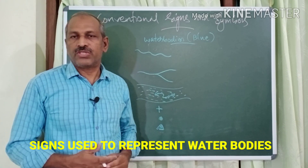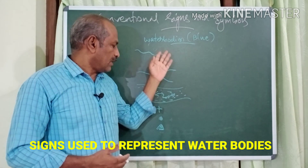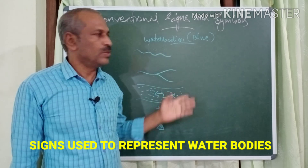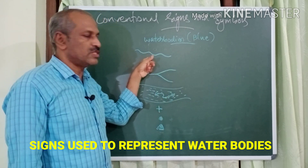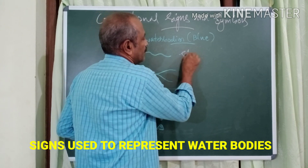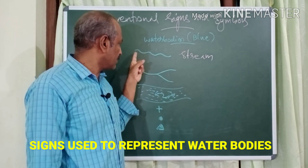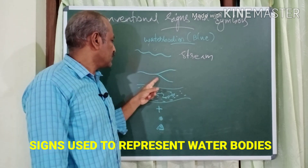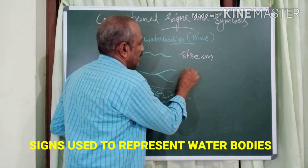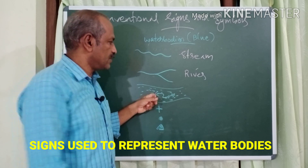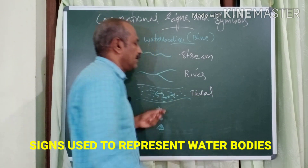Now let's see how water bodies are represented in the topographic map. Water bodies are represented using blue color. A thin single line represents a stream. A wider line represents a river. And a line with an arrow marking shows a tidal river.